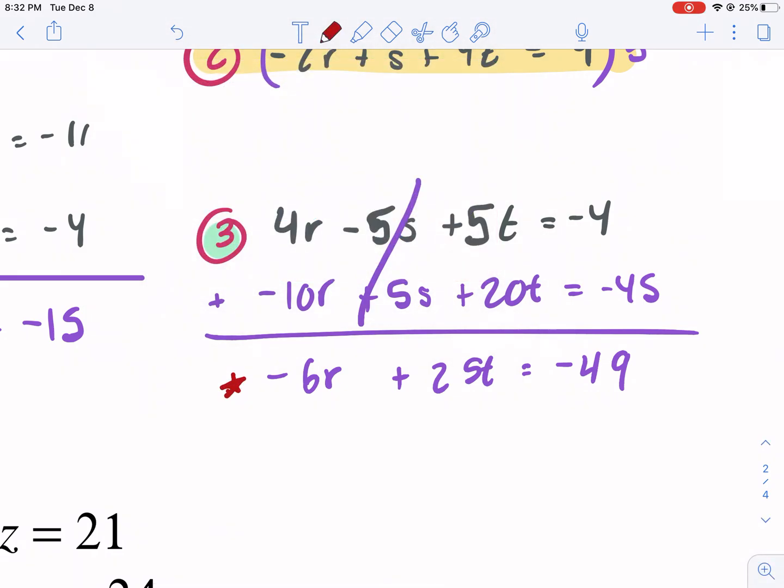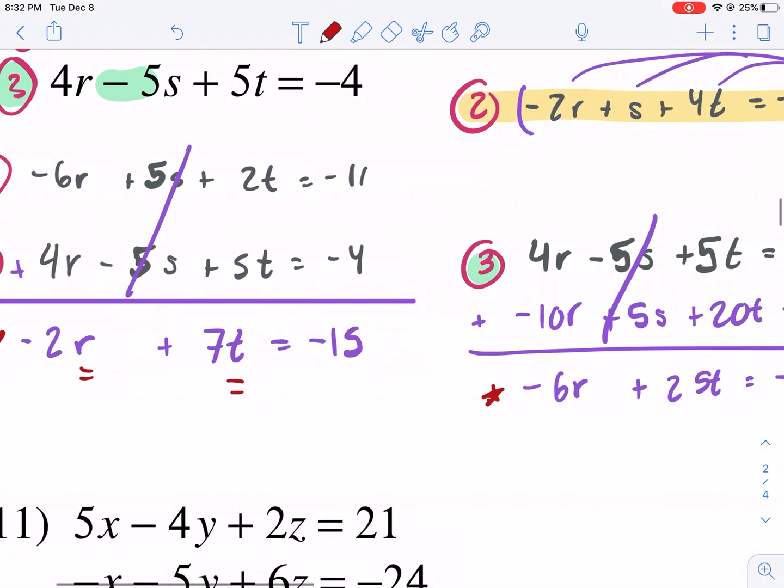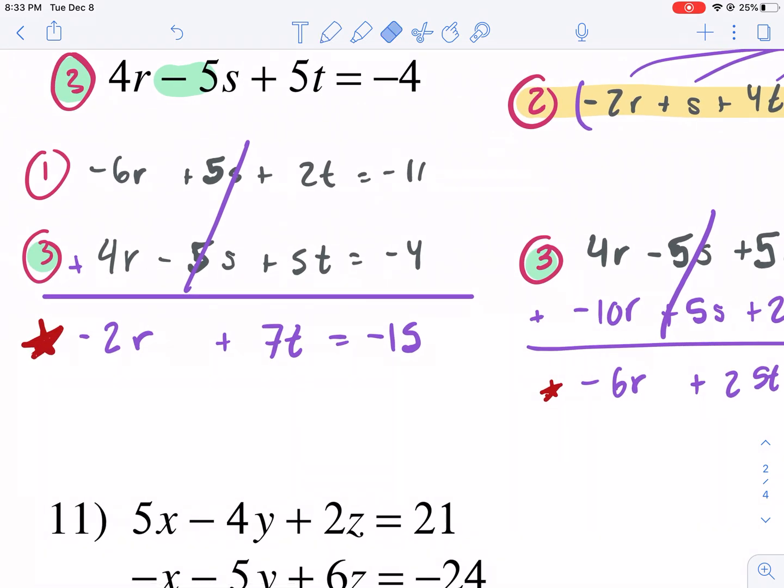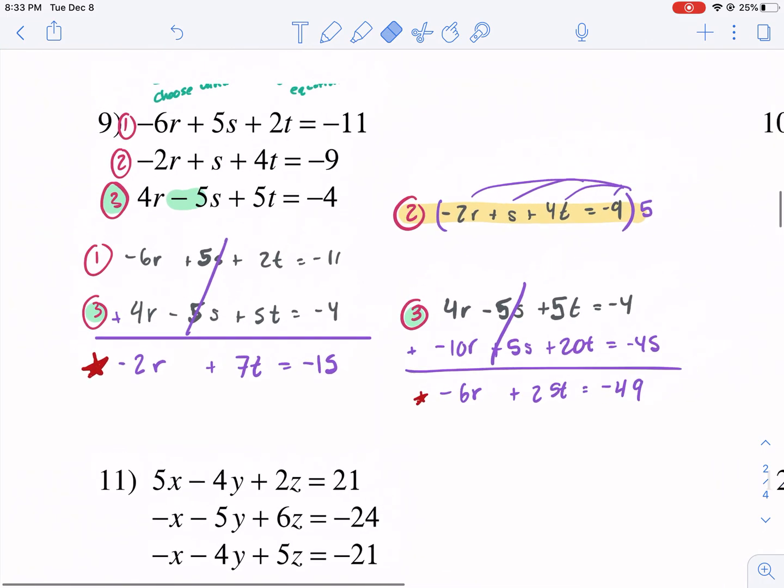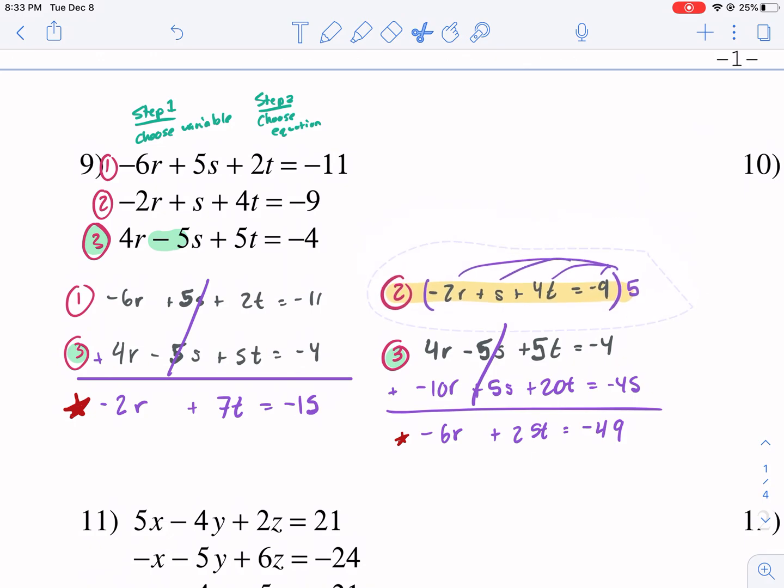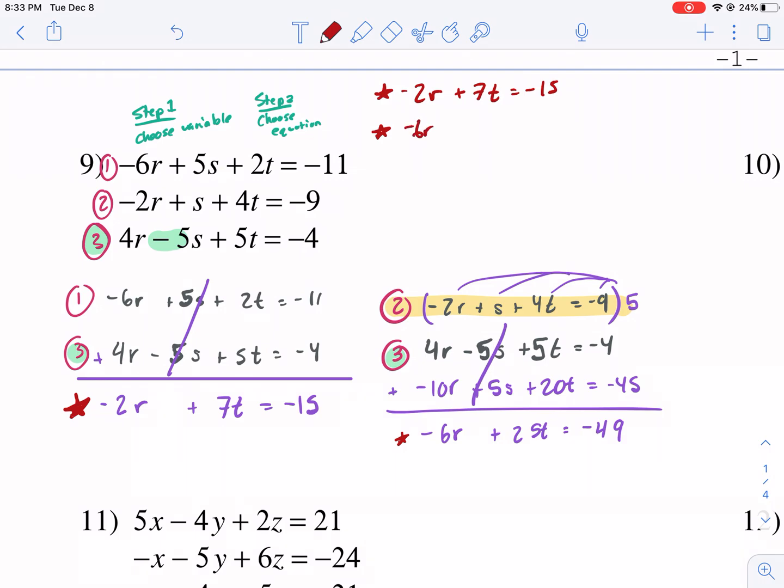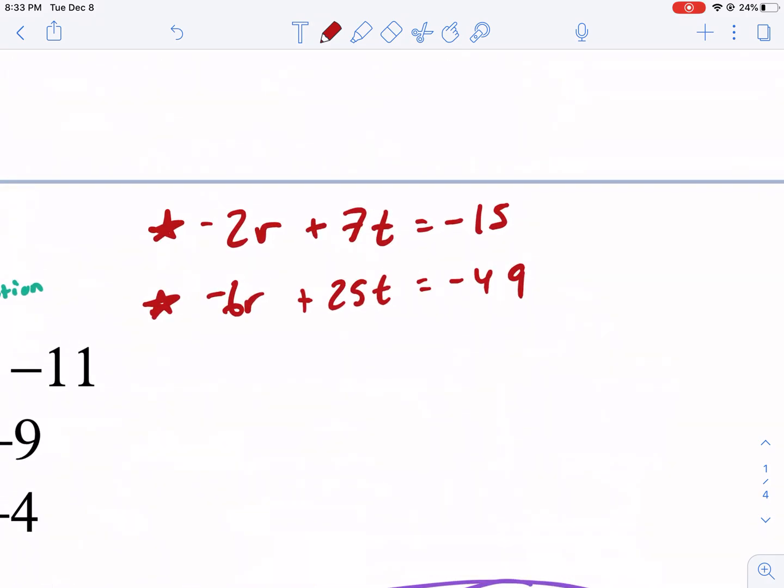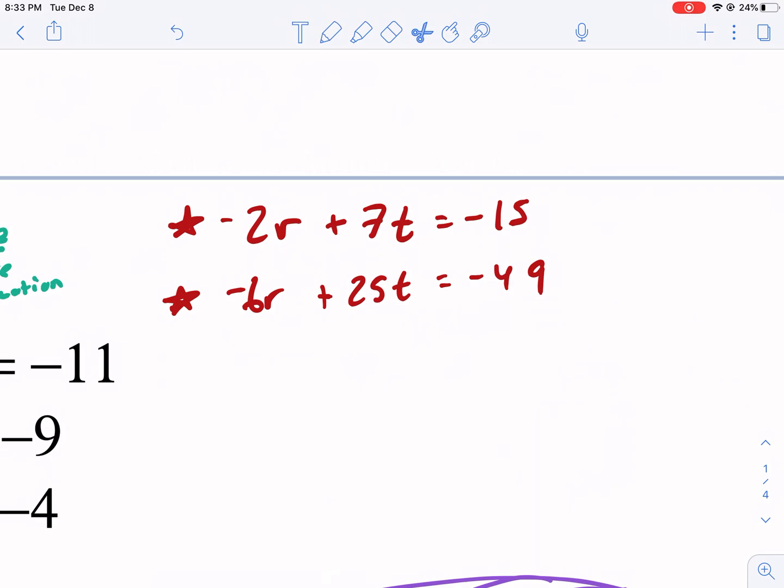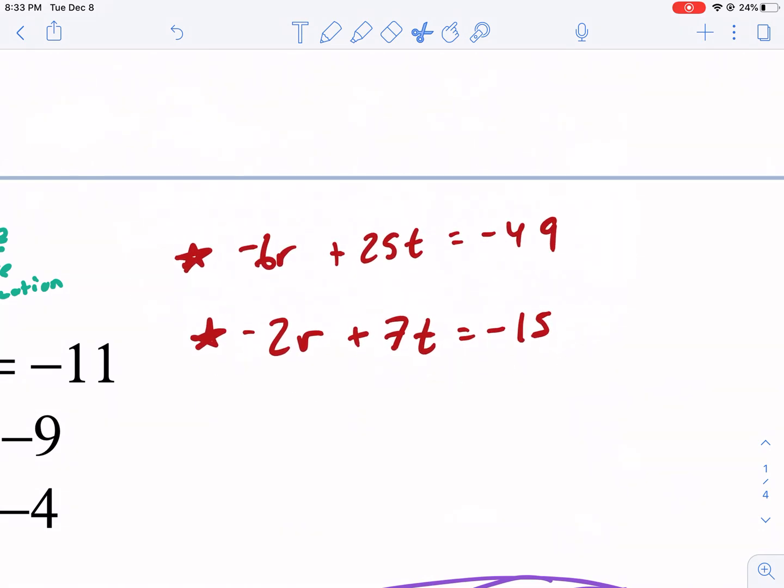And the other problems we did on the first page, it was much easier because we already eliminated two variables and we had one like R equals two, for example, but it's not the case here. So it's going to require a little bit more work. So now I'm going to take these two equations and rewrite them for you guys. I'm just going to rewrite my two equations in two variables. So negative two R plus seven T equals negative 15, and negative six R plus 25 T equals negative 49. Now it requires a little bit more work because we have to eliminate a variable and we can choose any one we want. This is just normal two variable systems using elimination.